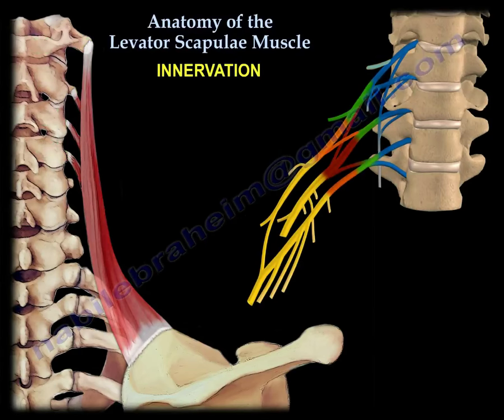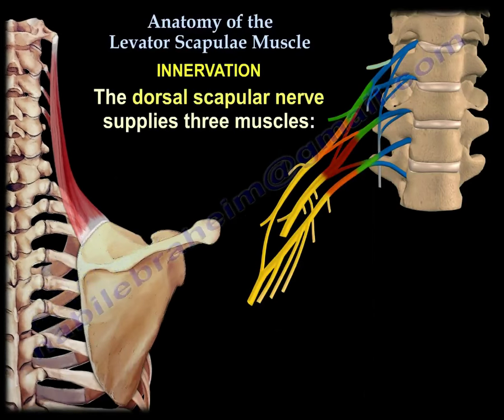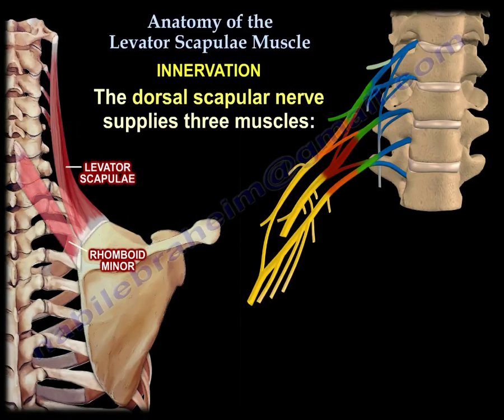The dorsal scapular nerve innervates three muscles: the levator scapulae, the rhomboid minor, and the rhomboid major.